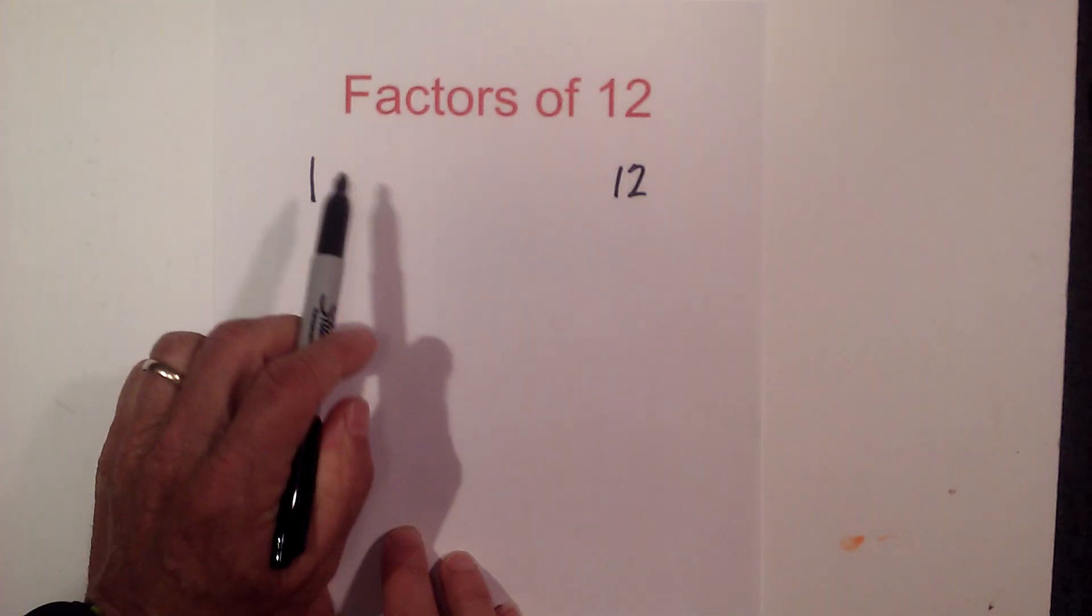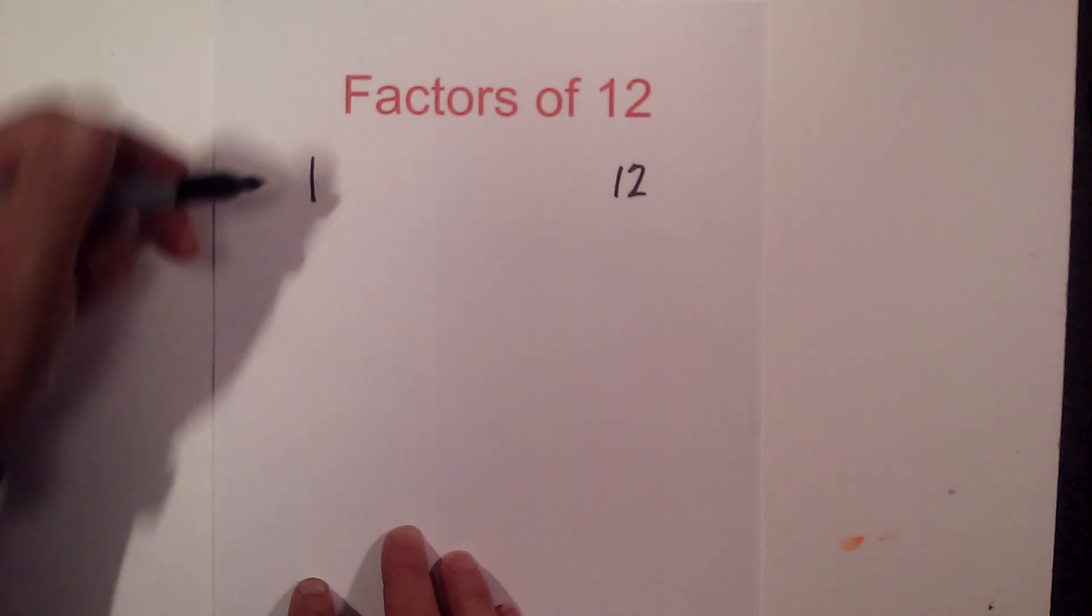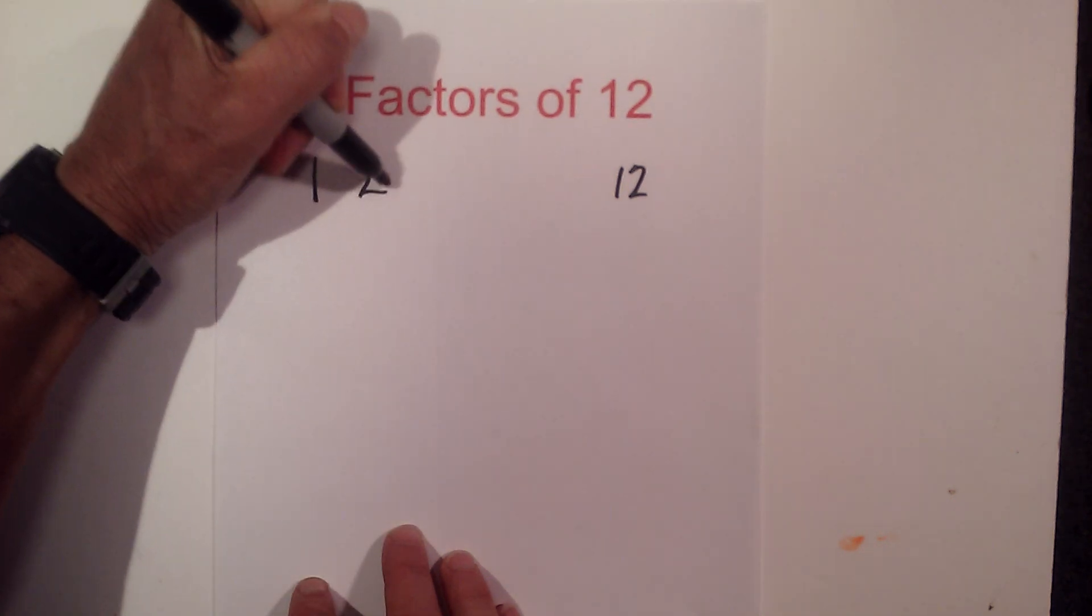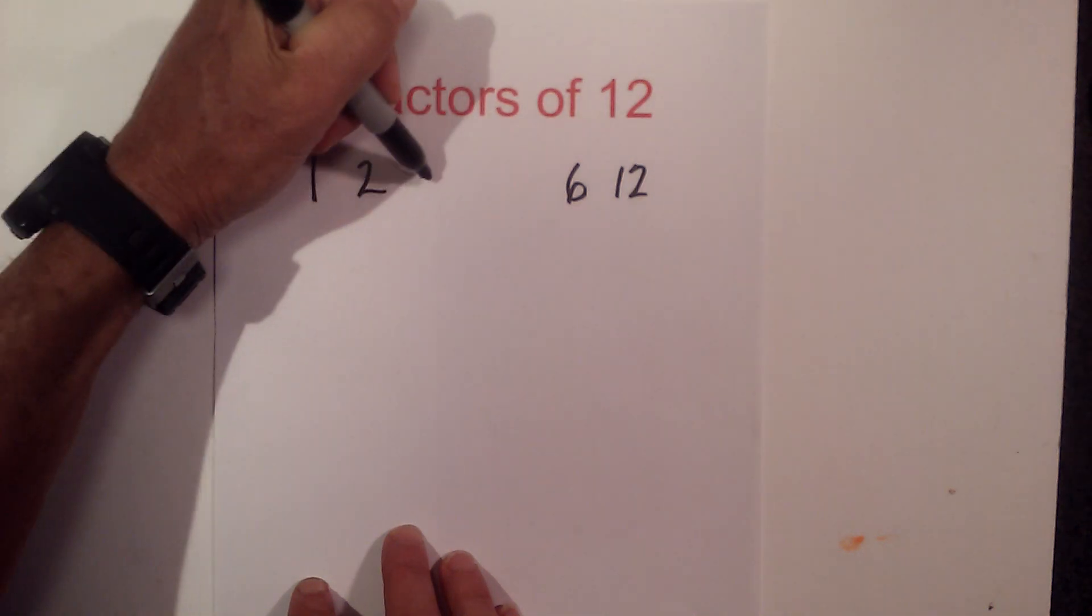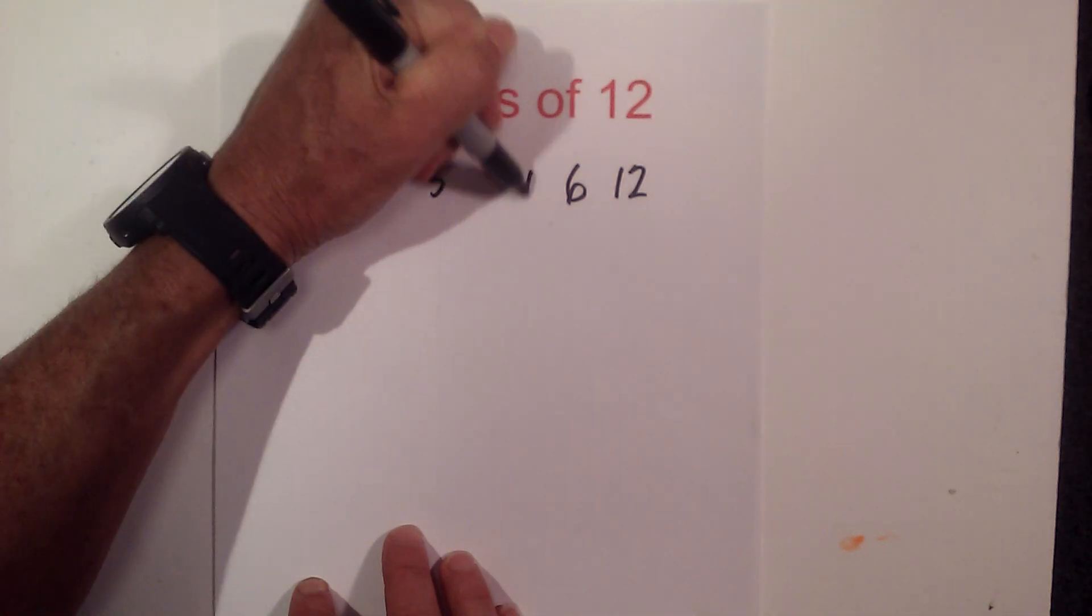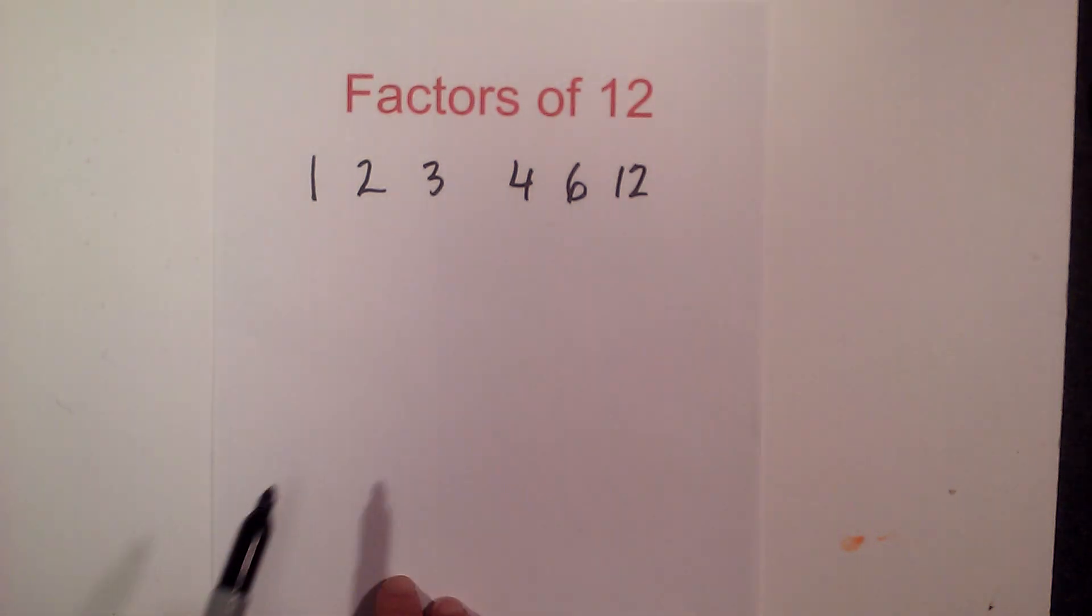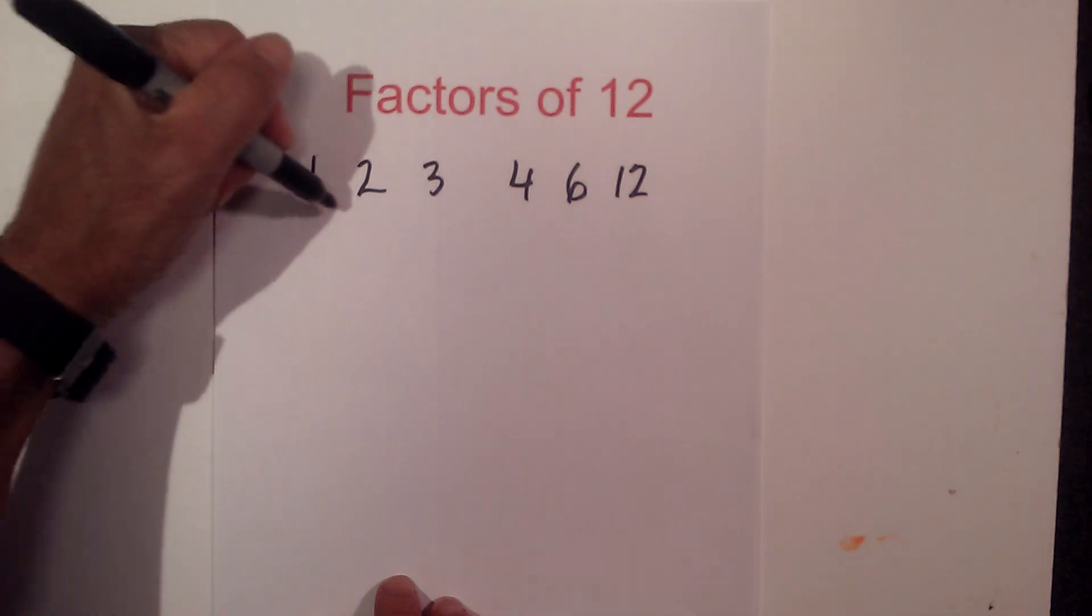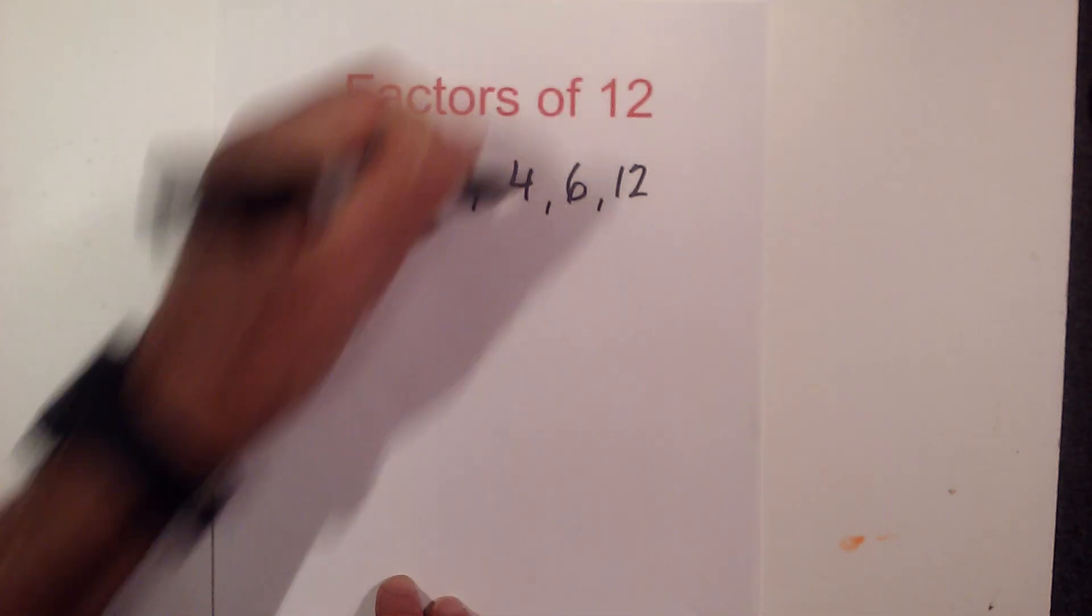12 and then find the numbers in between that multiply together to equal 12. And so I know that 2 goes into 12 if you multiply it by 6, and then 3 times 4 equals 12, and this works out perfectly. There's no other numbers between 3 and 4, so I know I have all the factors of 12 and they are 1, 2, 3, 4, 6, and